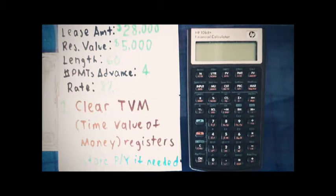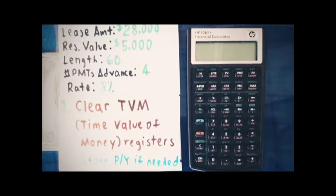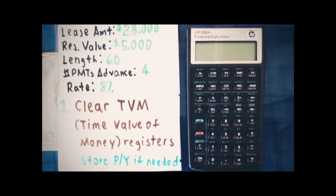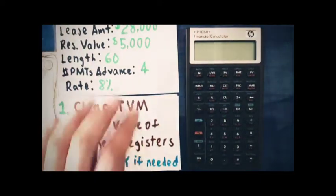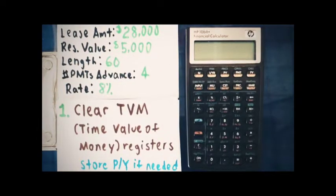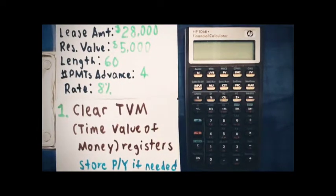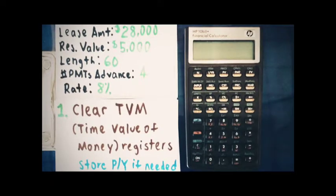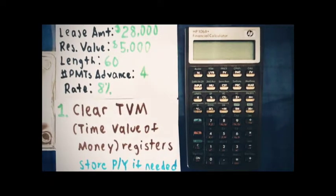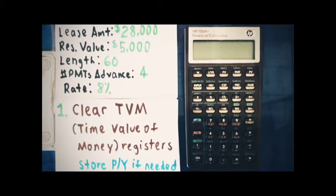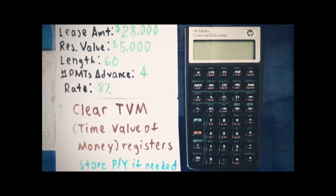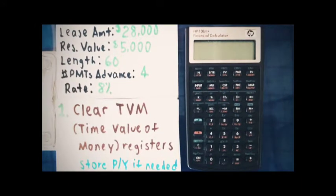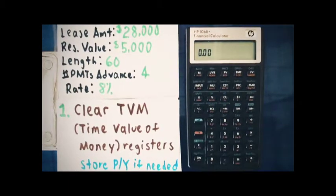Just to show that this technique can be done on multiple calculators, I'm going to demonstrate the next example on a Hewlett-Packard 10B2 Plus Financial Calculator. We have equipment valued at $28,000 at the time of closing, expected to have a residual value of $5,000 at the end of 60 months. This equipment will be leased for 60 months with four advanced payments, and the financing rate is 8%.